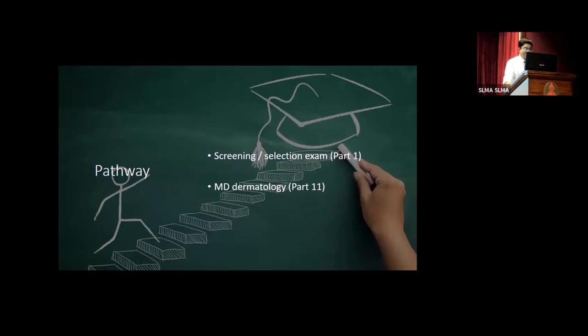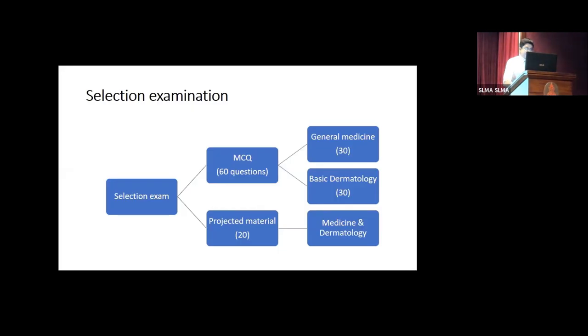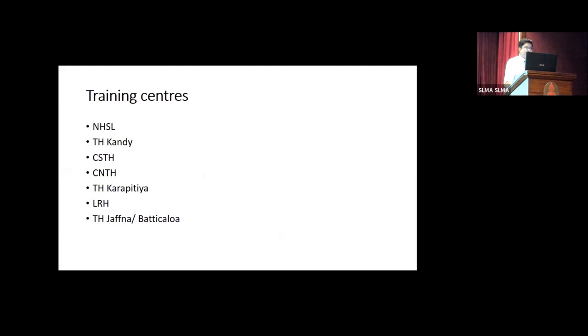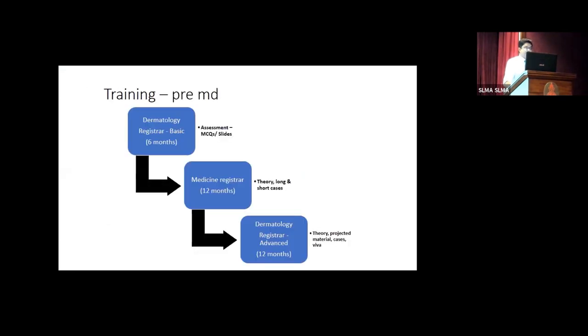You can download the prospectus from the website. I'm just going to rush through. And this is the structure of the part one exam. As I said earlier, there are 30 MCQs, 50% from general medicine. And even within the projected material, the slides, there are five out of 20 from general medicine. These are the training centers we have at the moment.